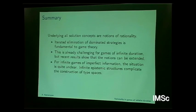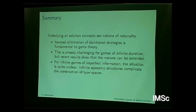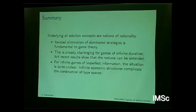When we go into games of infinite imperfect information, the situation is quite unclear, and the kind of infinite epistemic structures that arise complicate the construction of type spaces, which is very important for giving foundations for rationality in game theory. The aim of the talk is really that I am confused and I want to spread my confusion and hope that some other people have some clear thoughts on this.